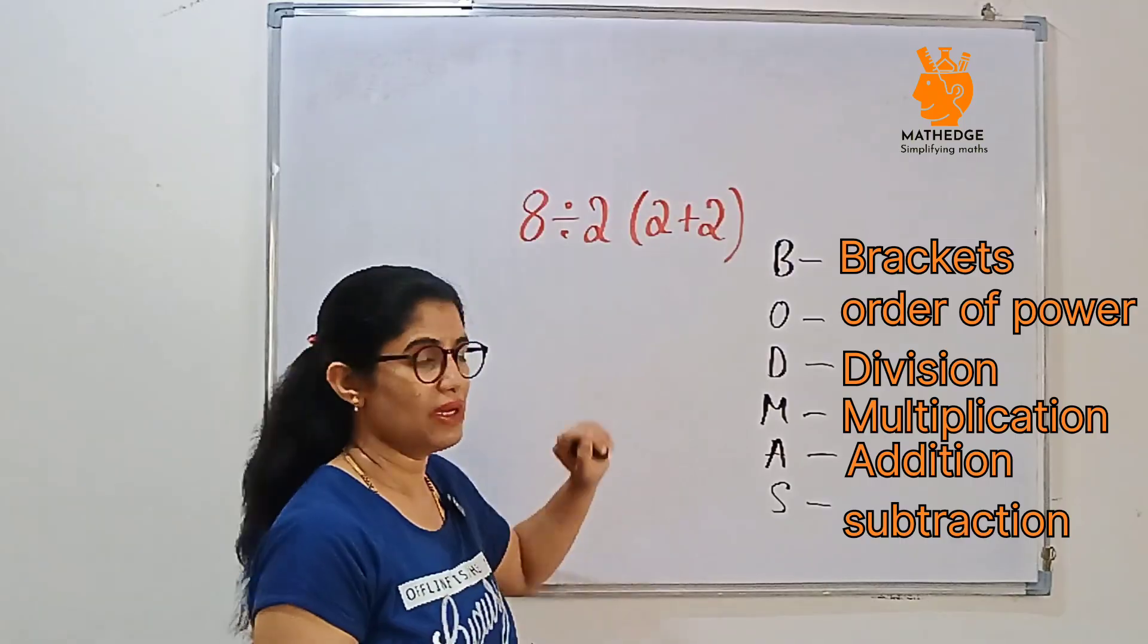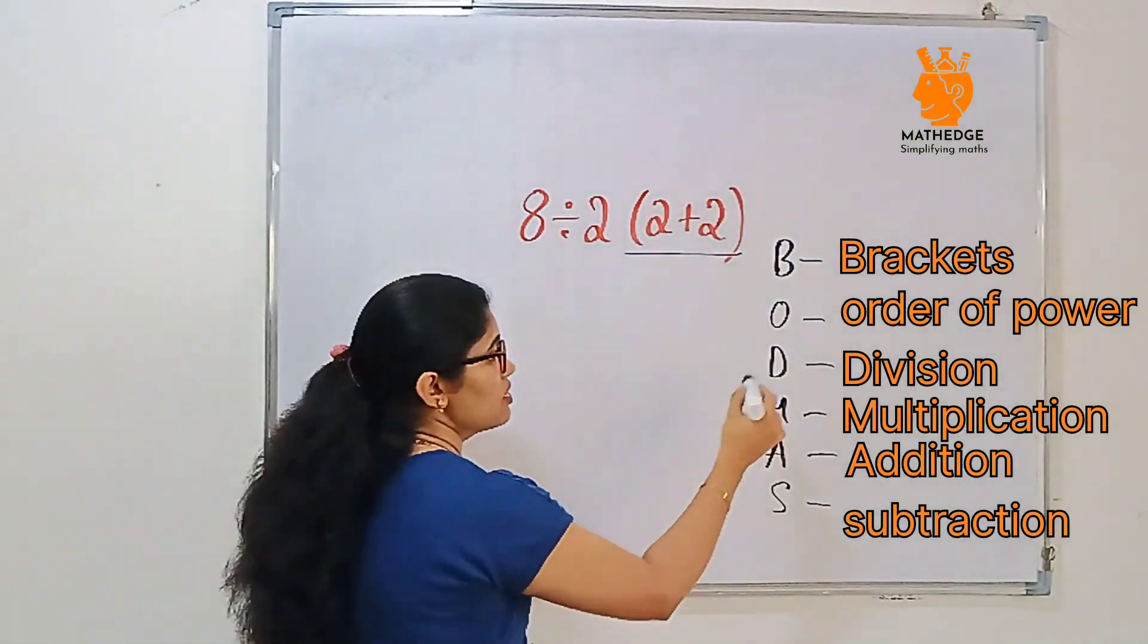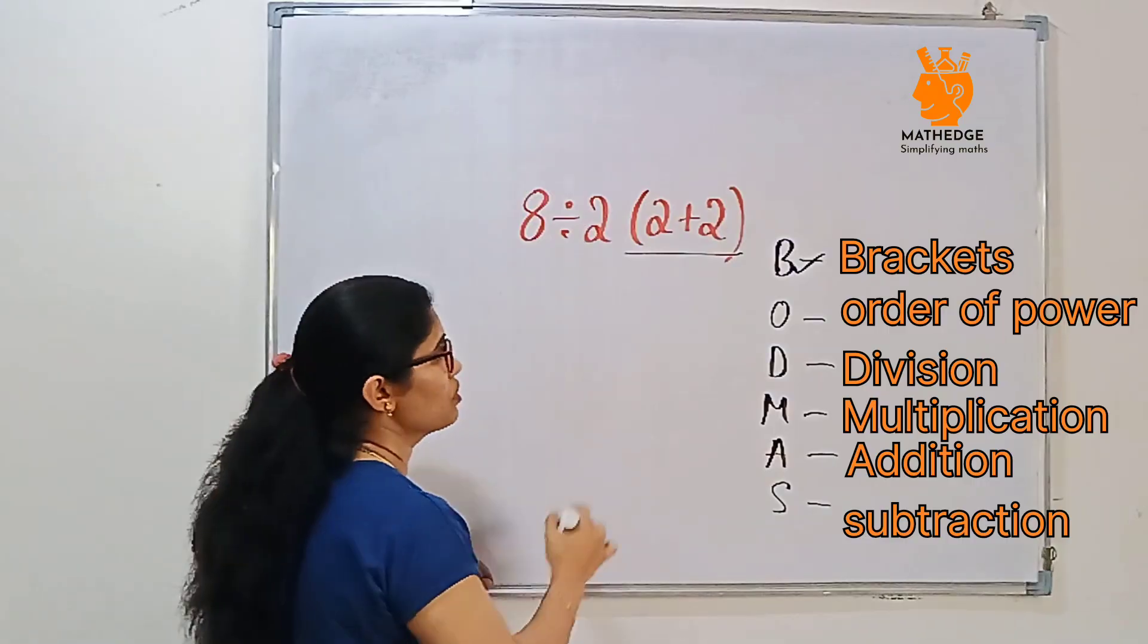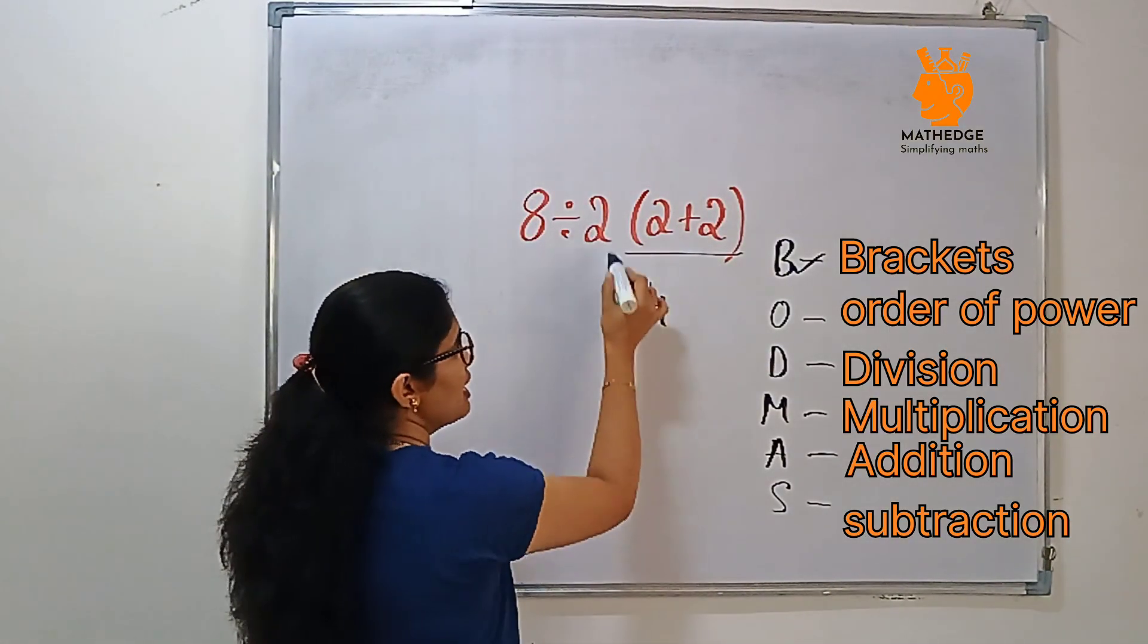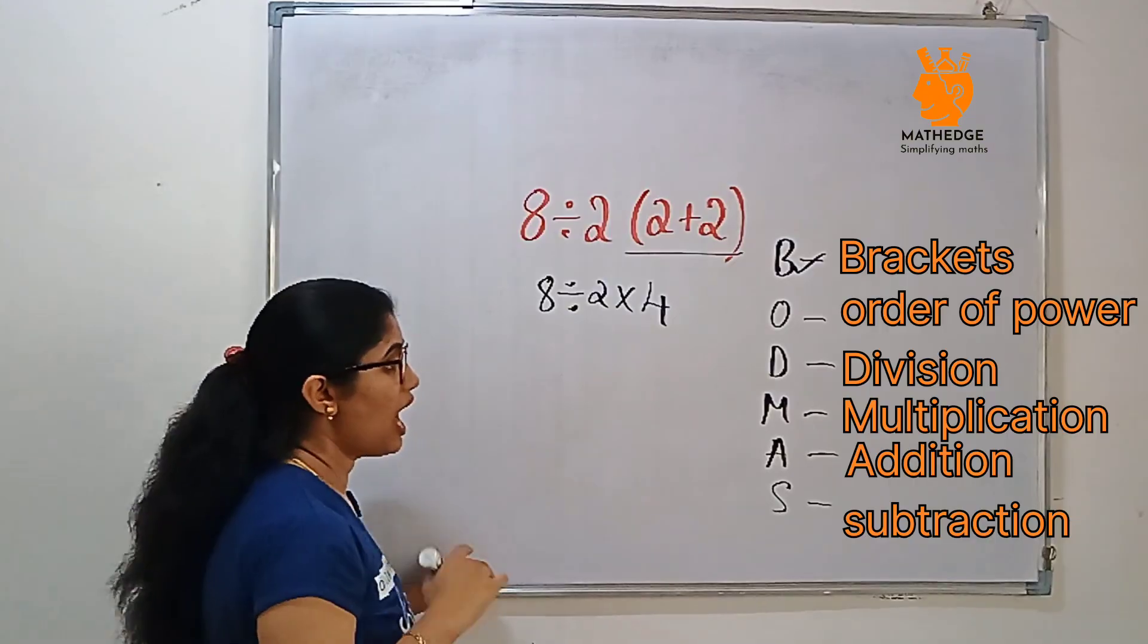In this order we need to apply the BODMAS step. Here, first we have a bracket, right? So this we need to go. 2 plus 2 is 4. Then here we have a multiplication. Write the remaining numbers.